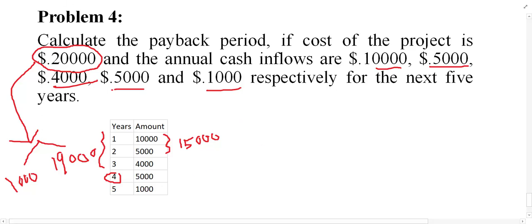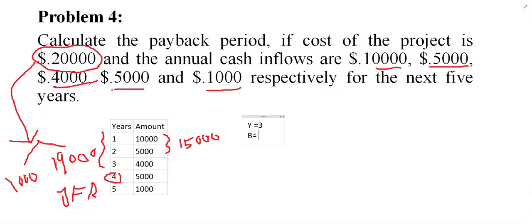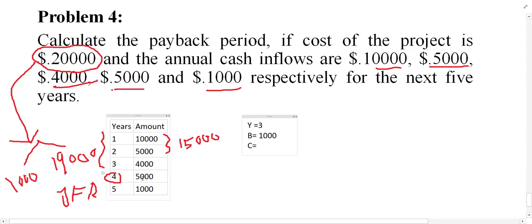Year four can be called the year of final recovery, because the balance of three years is 19,000, and only 1,000 taken from year four is just enough to cover the cost of the project. So the value of y — the number of years before the year of final recovery — is equal to 3. The value of b — the balance yet to be recovered — is 1,000.